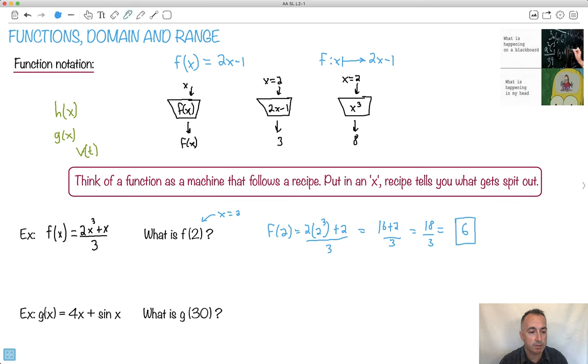I could do something similar with g of x. I have something called a g. But that's fine. It's defined with x's. And I want g of 30. That means, again, anywhere I see any x's, I make them all 30. So let's just say what I need to do now is actually figure this out. So I want g of 30 is going to be, well, 4 times 30 plus sine of 30.